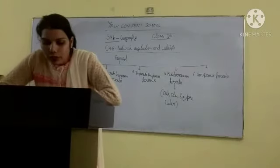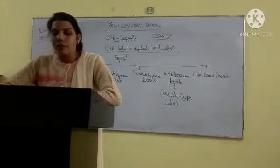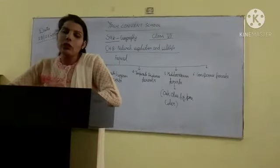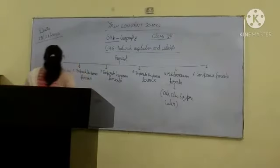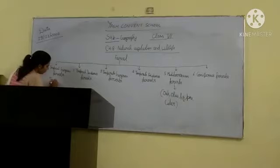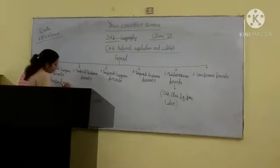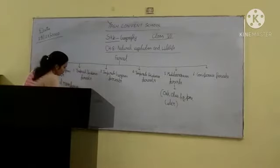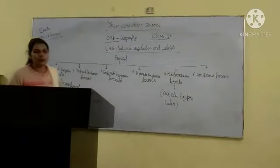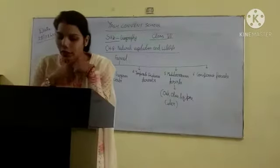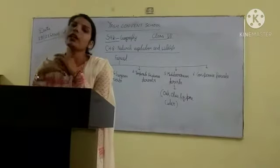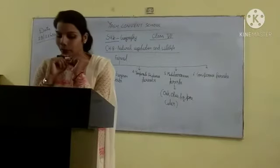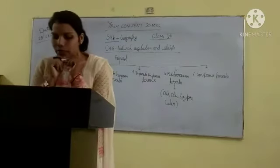So the first forest type is the tropical evergreen forest. The tropical evergreen forest is also known as the tropical rainforest. This forest is found in the Amazon — Amazon Basin in South America.